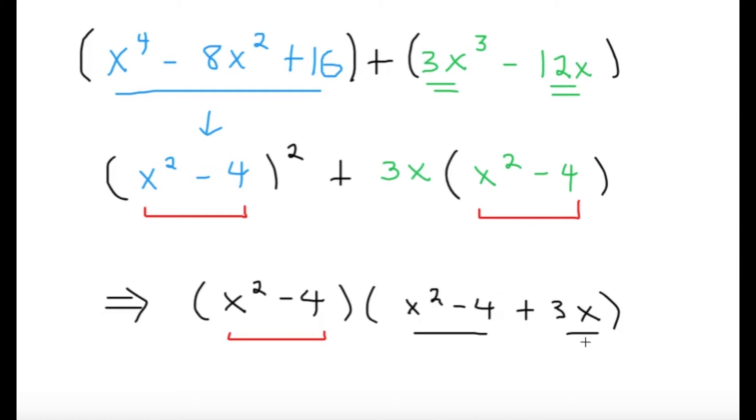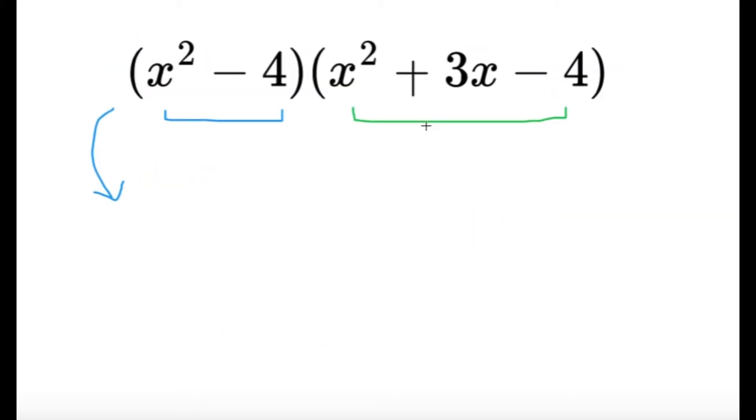So after some rearrangements, I'll be getting the following expression. Now x squared minus 4 is our well-known difference of two squares, so I know I can factor it into x minus 2 and then x plus 2.